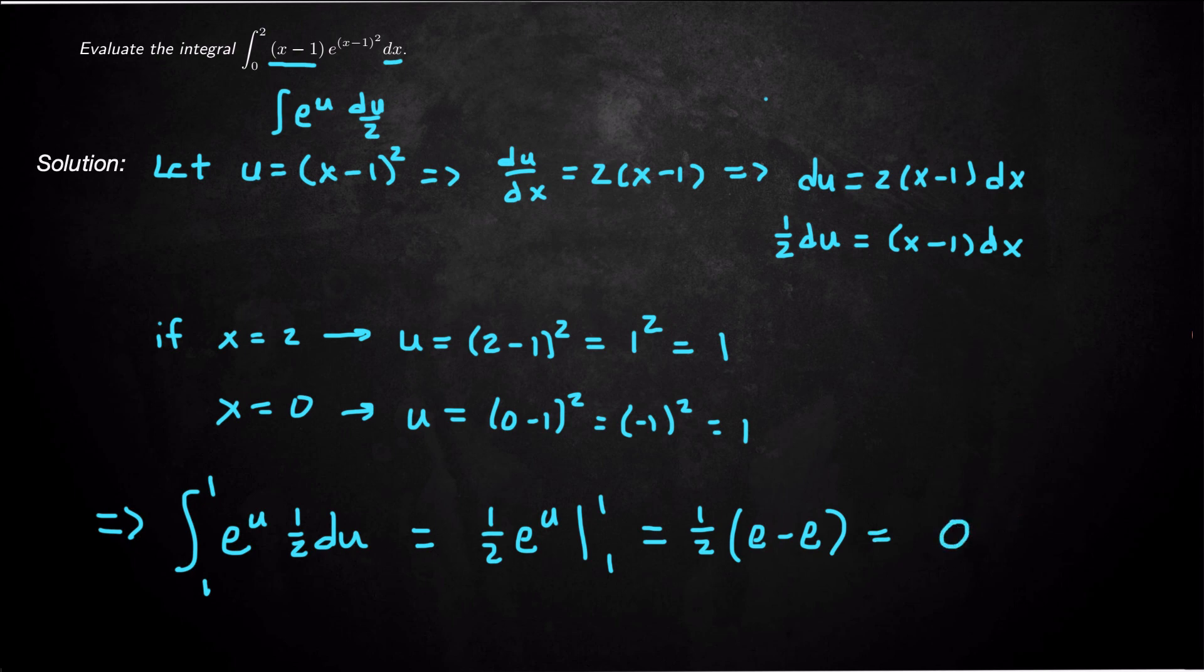We would have known that already - the same bounds guarantee an integral of 0 because there's no area over a single point. Either way, the integral is 0, and that's how we do this u-substitution.